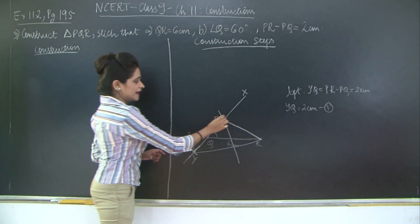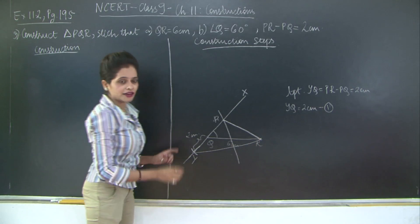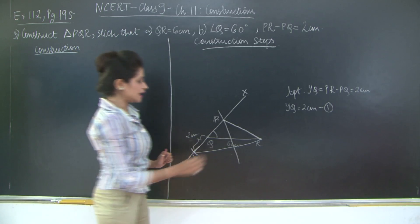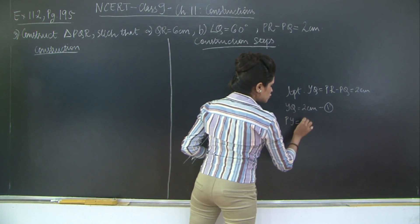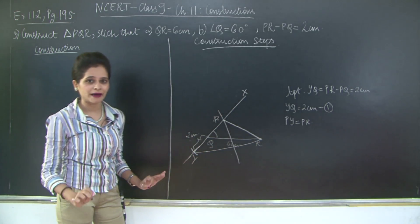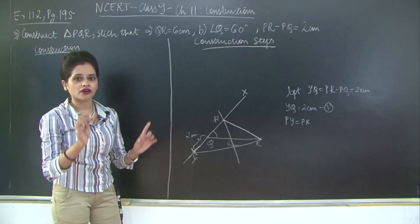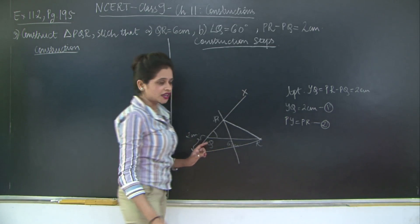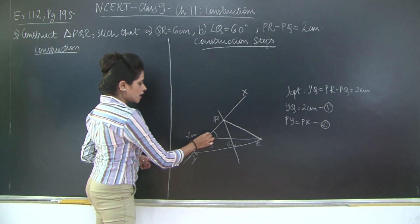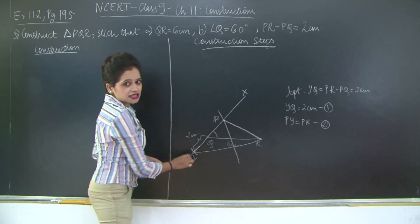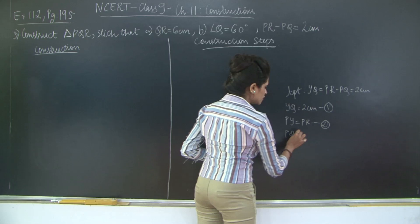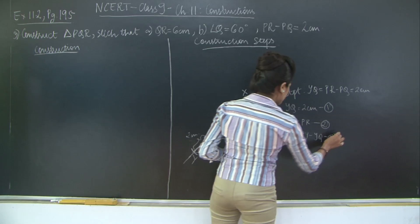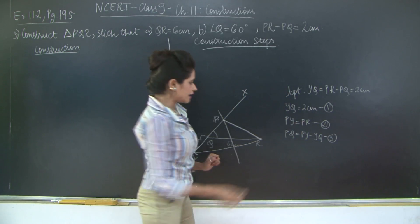Now, P lies on the perpendicular bisector of YR, therefore P is equidistant from Y and R. That means PY equals PR, because any point lying on the perpendicular bisector is equidistant from the endpoints of the line segment. So PY equals PR — let's mark this as step 2. From the construction you can see that PQ equals PY minus YQ — let's mark this as step 3. Now since PY equals PR, we have PQ equals PR minus YQ.